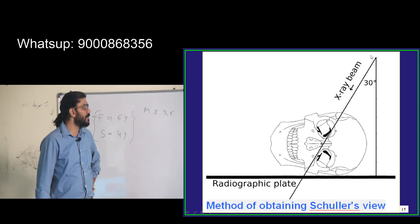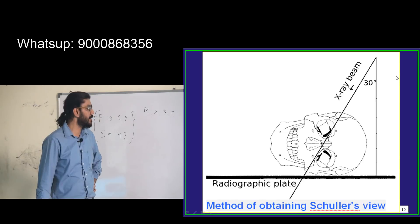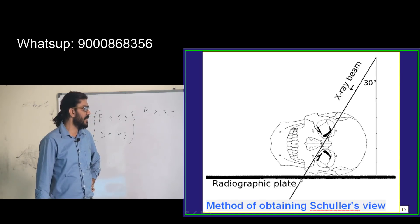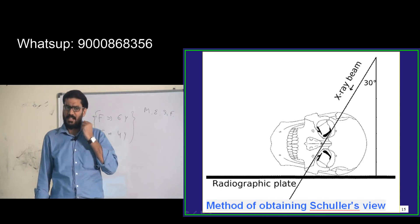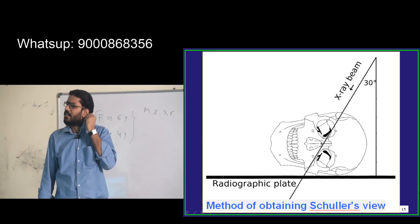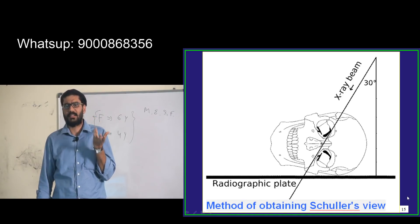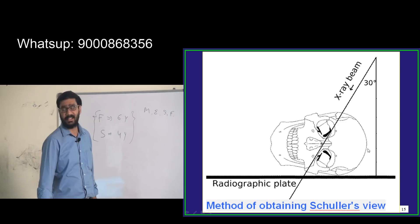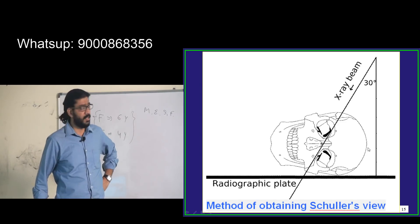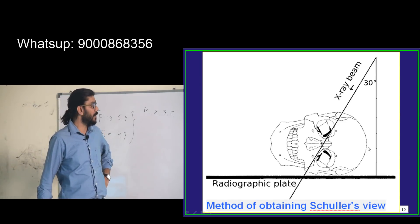The X-ray beam falls cephalocaudally — this is the cephalic end, this is towards the caudal end — for obtaining a Schüller's view. Just remember: Schüller's t-shirt is nearer to the mastoid process — just remember 'MB' — mastoid process. Remember that for exam purposes; they won't ask you more than that.